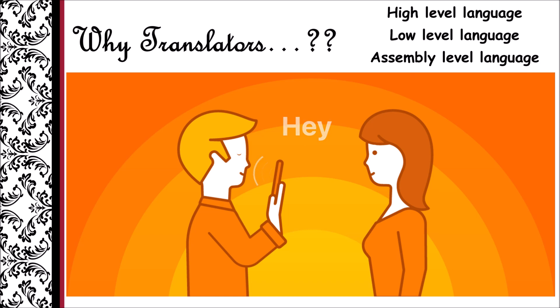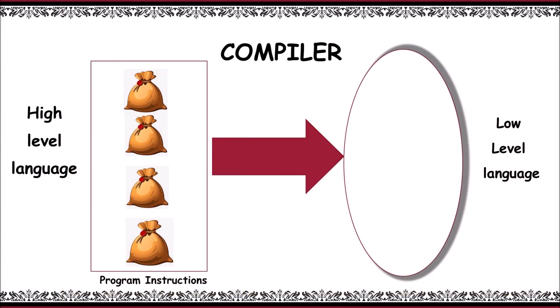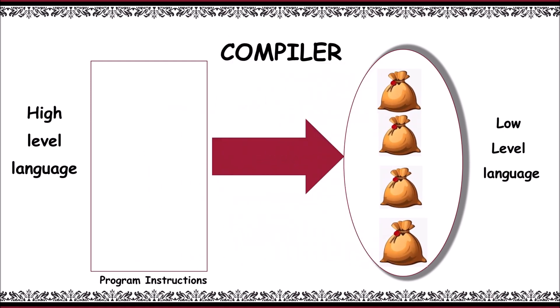Let's start with the compiler. The compiler scans the entire program and translates the high-level language content into machine-level language content all at once. Programming languages like C, C++, and Java use compilers.